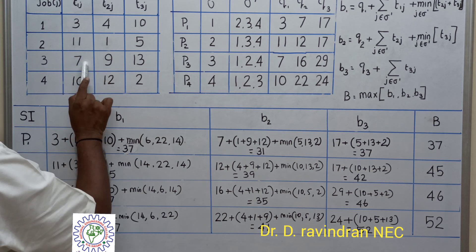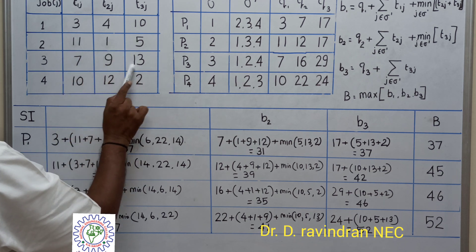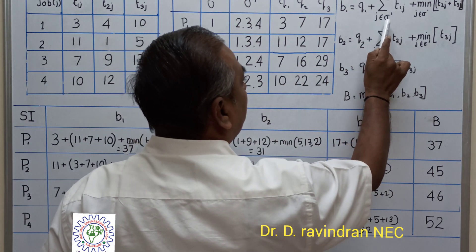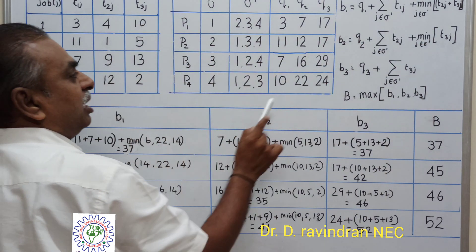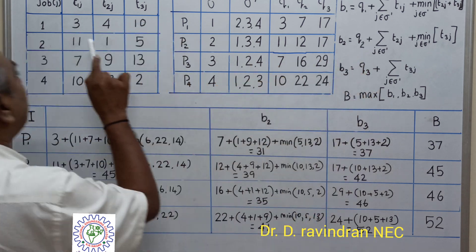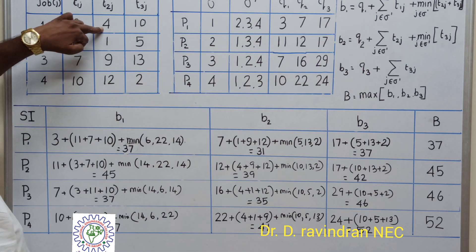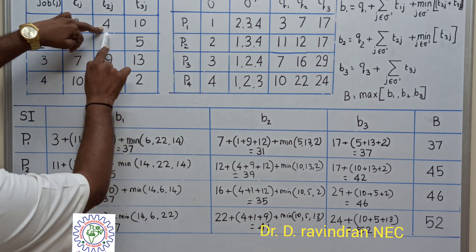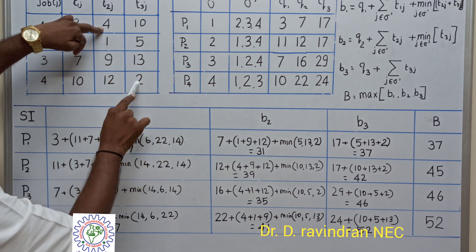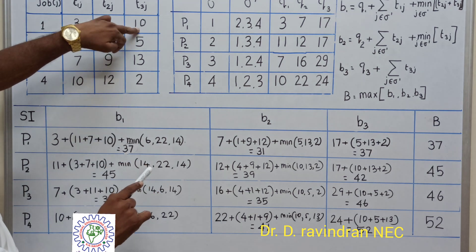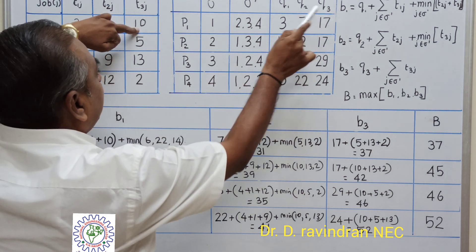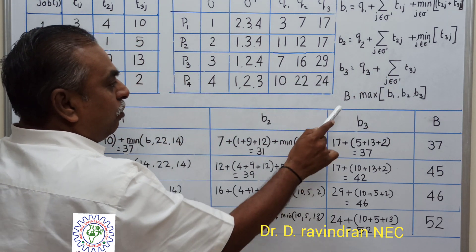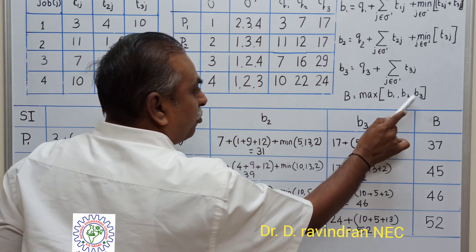Specifically, B1 = Q1 + sum of remaining job processing times on machines 2 and 3 + minimum of those values. B2 = Q2 + sum of remaining processing times on machine 3 + minimum of those values. B3 = Q3 + sum of remaining processing times. This is given as equation one.